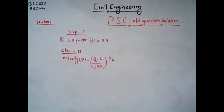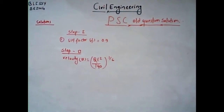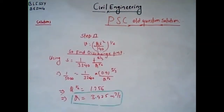Step 1: The silt factor F = 0.9 is already given in the question. Step 2: We need to determine the discharge Q using Lacey's derived relation between bed slope, silt factor, and discharge: S = f^(5/3) / (3340 × Q^(1/6)). Since Q is unknown, we use this expression to solve for Q first. Substituting S = 1/5000 and F = 0.9, we can find the discharge the channel can accommodate.